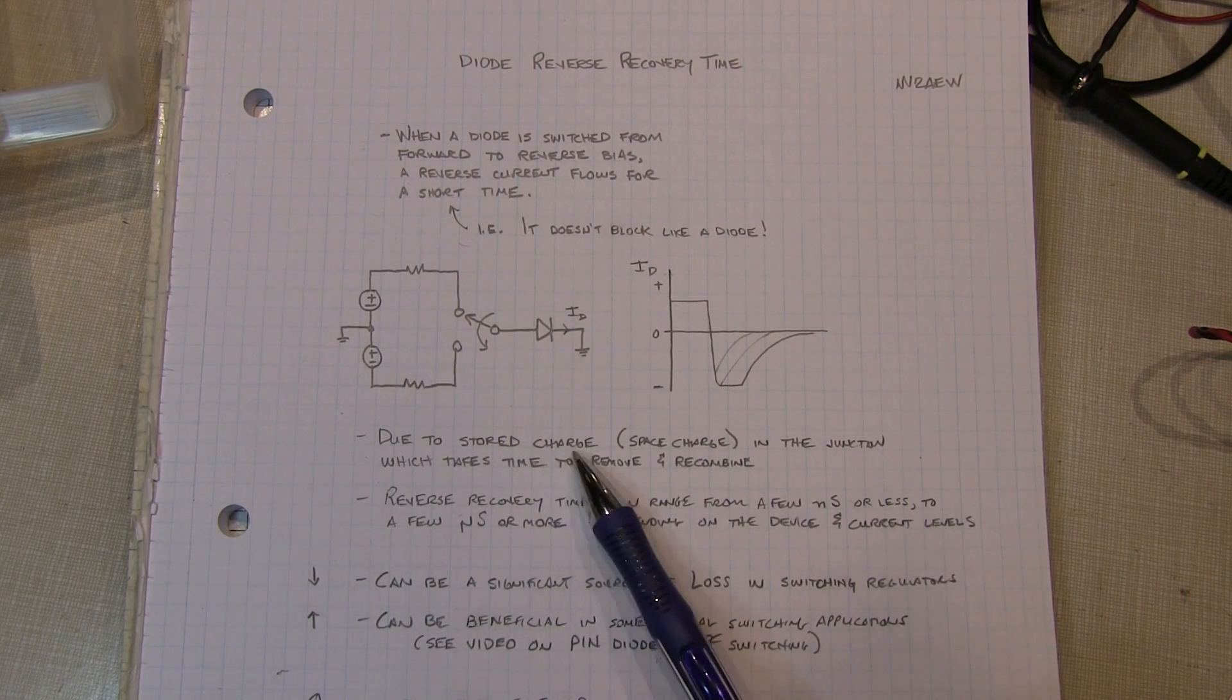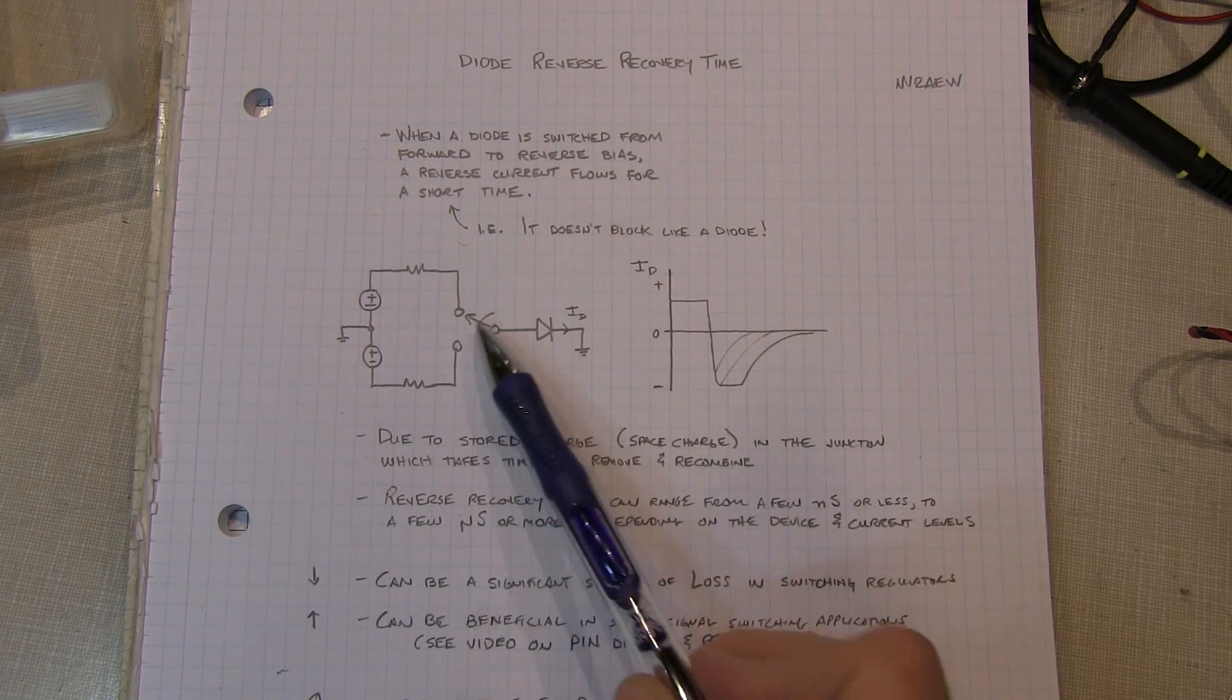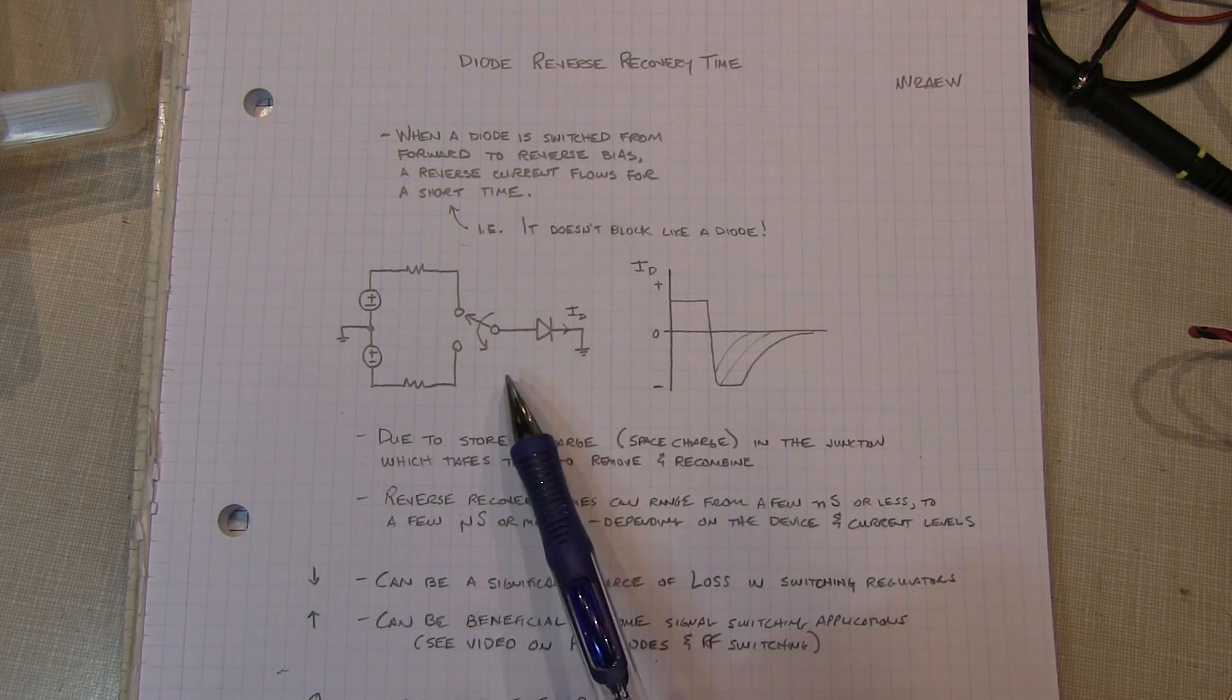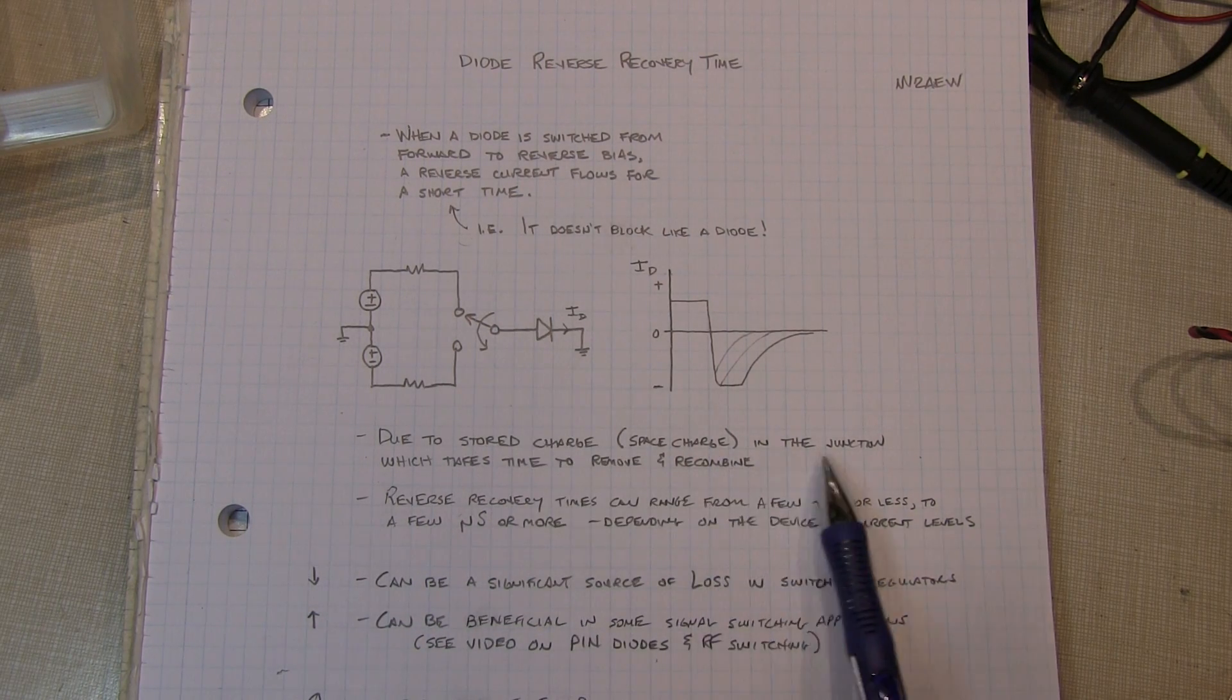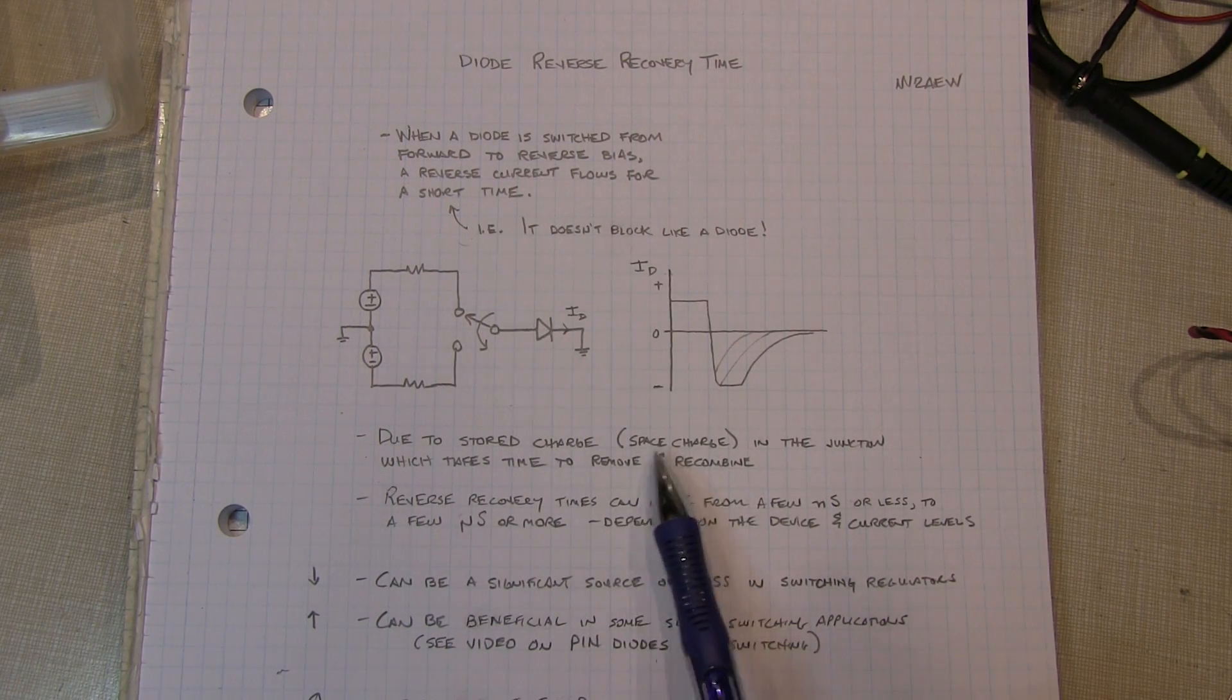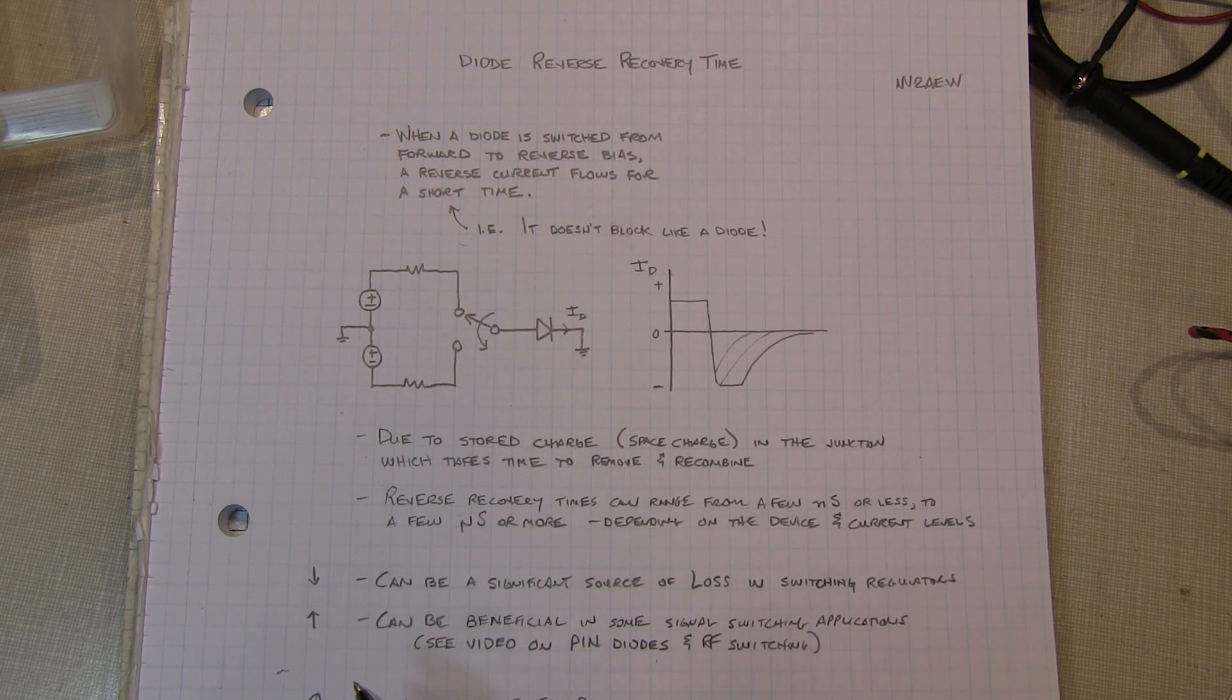This is due to essentially the stored charge in the PN junction. When the junction is forward biased, there's a space charge that's built up around the junction that basically allows the junction to conduct. When you reverse the bias, that charge has to be removed and carriers have to recombine to reform the depletion region which causes the diode to block. And this doesn't happen instantaneously.